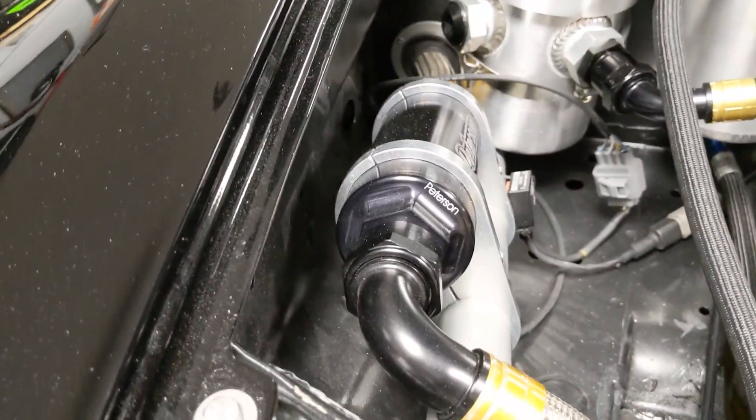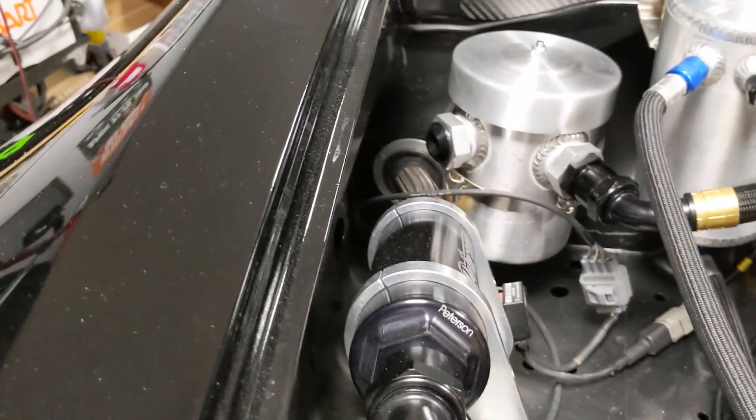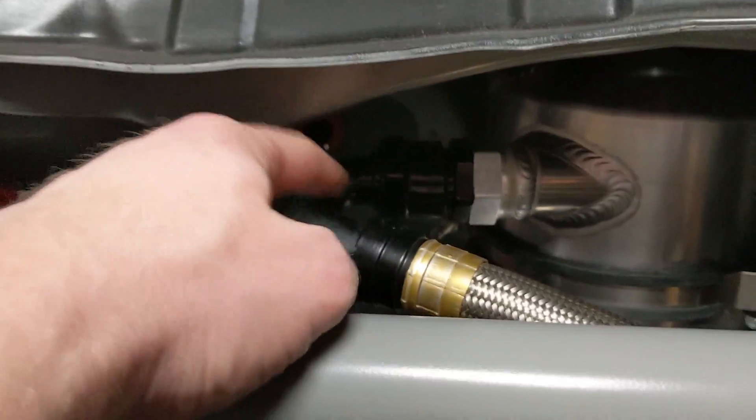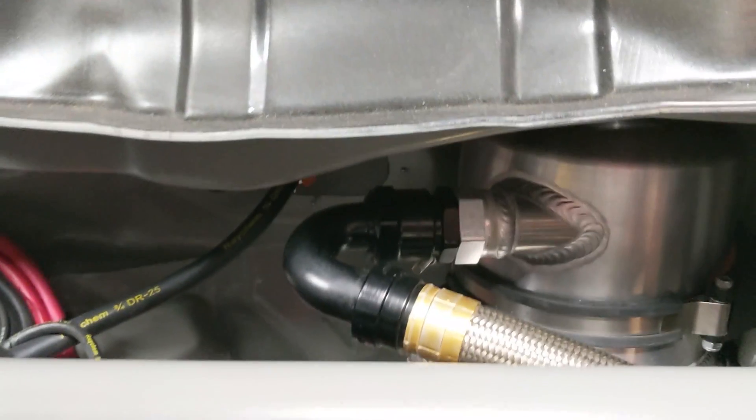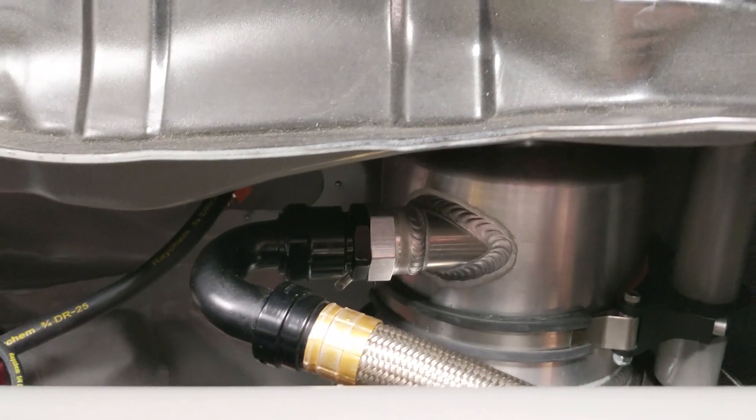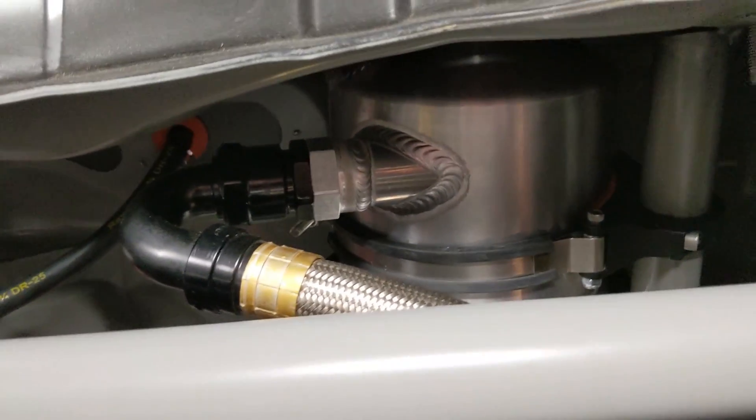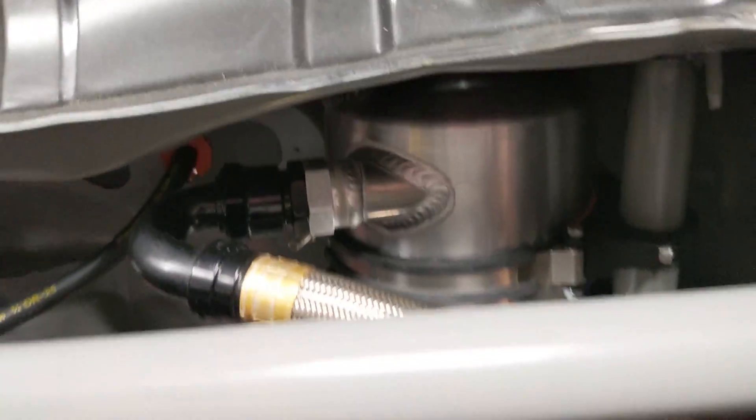Comes up here and then this is that inline filter. I have a Peterson one. Yeah, not required, but good idea. And then it goes back to the firewall. Comes to the firewall and then that's this line here that returns to the tank. Notice how it comes in tangent to the tank, which causes the oil to swirl and any kind of air in the system will get pushed out the top.